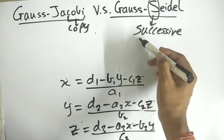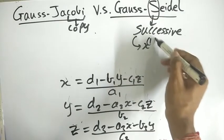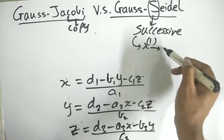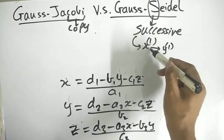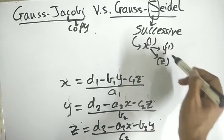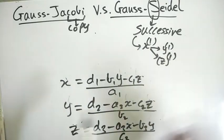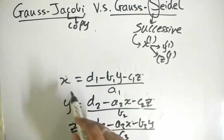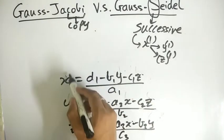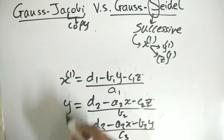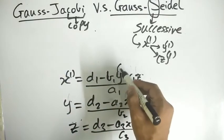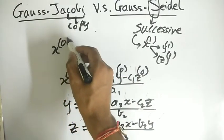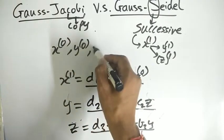What I mean from successive is, so Jacobi is copy and Seidel is successive. Successive means once you get x1, use it, use it afterwards to get y1 and use it to get z1. Let me tell you what it is. So here are the equations.